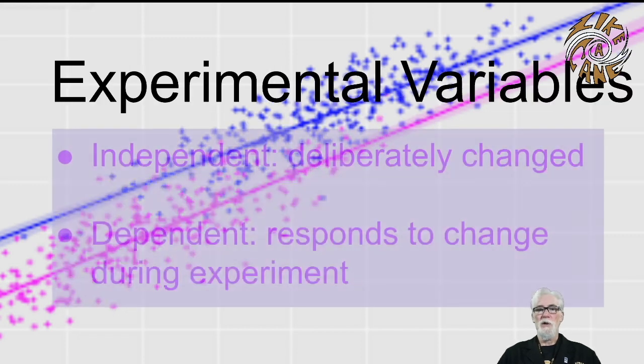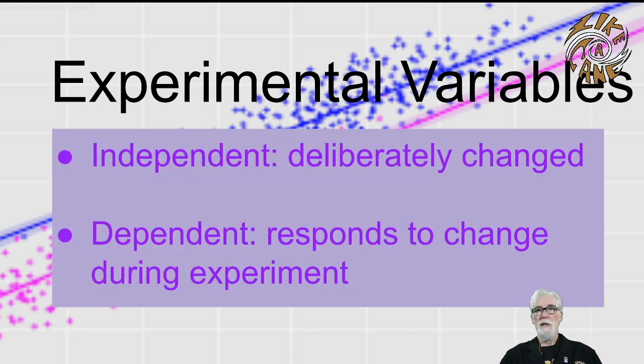The two types of variables in the experiment are called the independent variable and the dependent variable. The independent variable is the one that we deliberately change in the experiment, or in some cases, the independent variable is one that we cannot change, but we do know it.